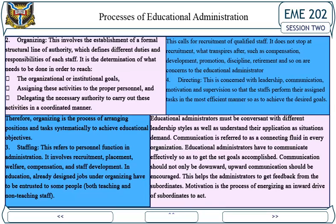2. Organizing: This involves the establishment of a formal structural line of authority which defines the different duties and responsibilities of each staff. It is the determination of what needs to be done in order to reach the organizational or institutional goals, assigning these activities to the proper personnel and delegating the necessary authority to carry out these activities in a coordinated manner. Therefore, organizing is the process of arranging positions and tasks systematically to achieve educational objectives.